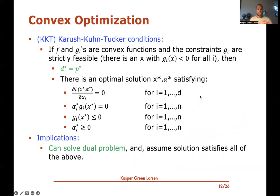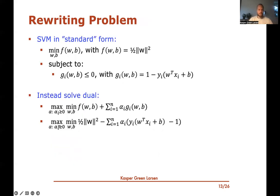If our data is linearly separable, the KKT conditions guarantee the dual value equals the primal value, so we can solve the dual optimization problem instead. Let's compute the dual for SVMs. The SVM is in standard form, and the dual problem is the maximum over non-negative alpha of the minimum over w and b of f(w, b) plus the sum over all constraints of alpha_i times g_i(w, b). Plugging in: f is half squared norm of w, and the g_i's contribute −alpha_i(y_i(w^T x_i + b) − 1).